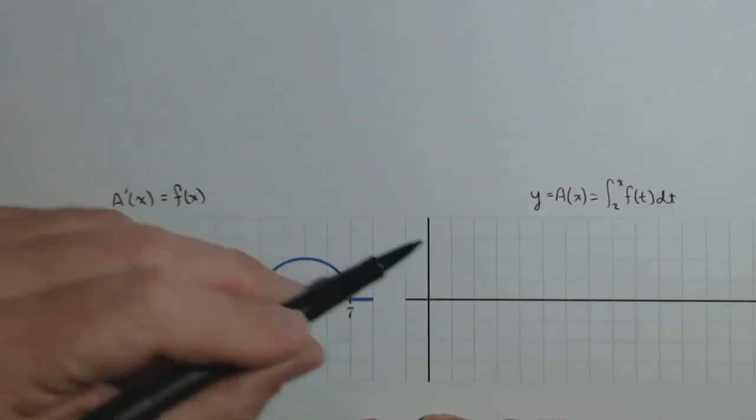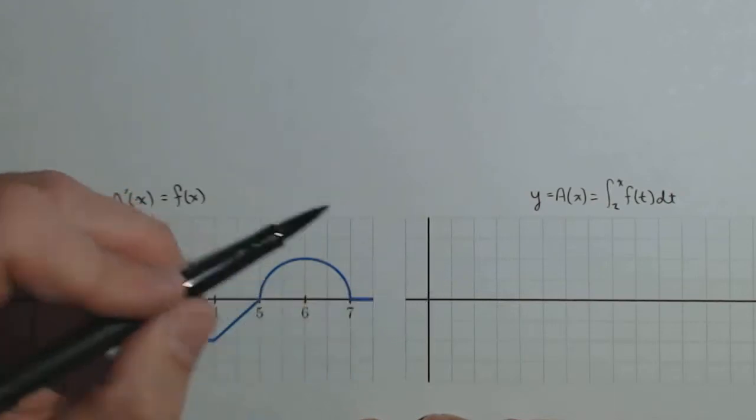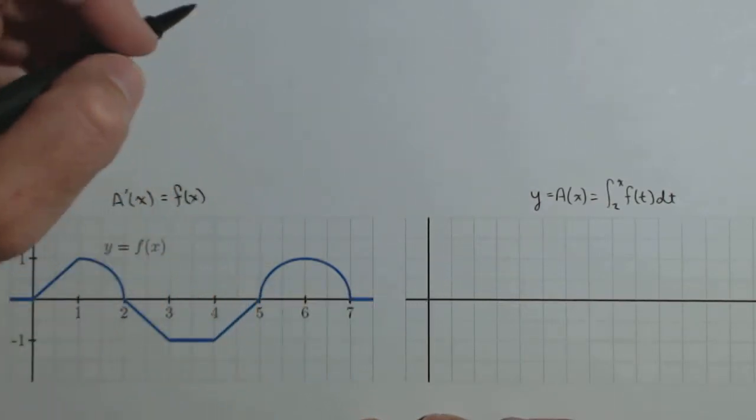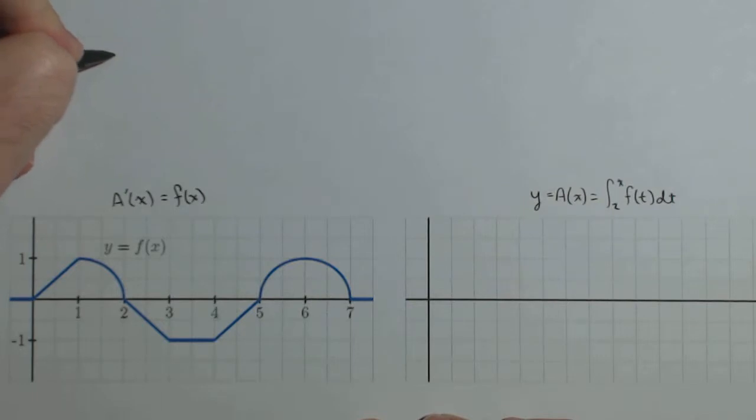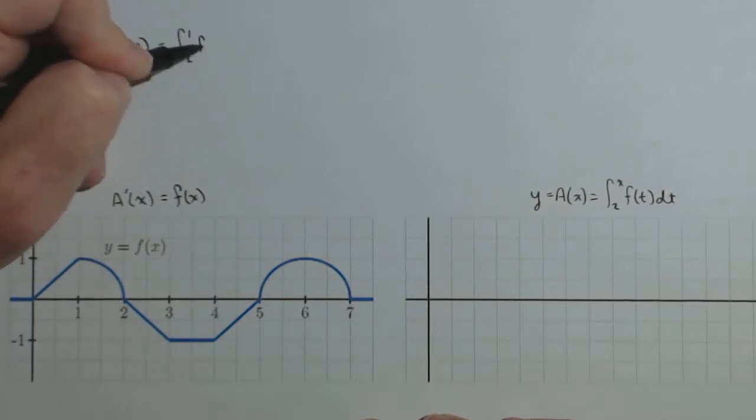So we're going to use that information when we sketch this as we have in some of the other activities. Now first off, we're asked to find a(1) and a(3) exactly. Now a(1) is going to be the integral from 2 to 1 of f(t)dt.